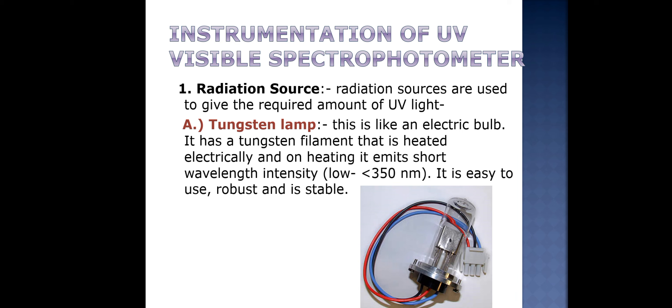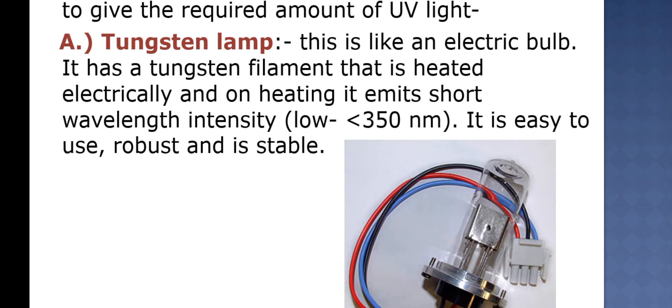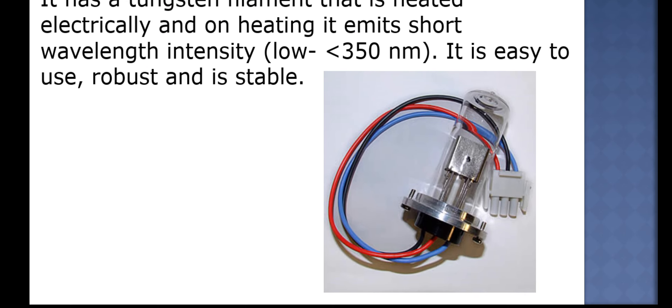The first lamp is the tungsten lamp, which is like an electric bulb. It consists of a tungsten filament that is heated electrically, and on heating it emits short wavelength intensity — less than 350 nm. It is easy to use, robust, and stable.